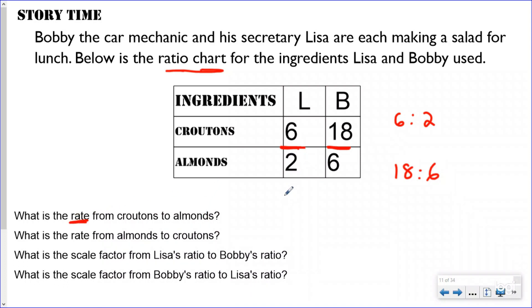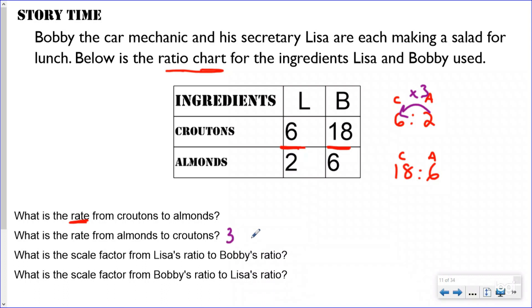I'll label these as croutons and almonds. Remember, the rate is the relationship between the numbers that make up the ratio. We're comparing the croutons to almonds in Lisa's salad. Going from almonds to croutons, the multiplicative difference is times three — so the rate from almonds to croutons is three. It's the same for Bobby's salad: six times three equals 18. The croutons are three times bigger than the almonds.